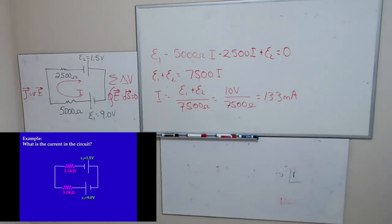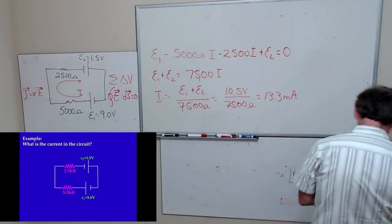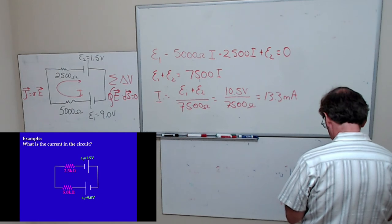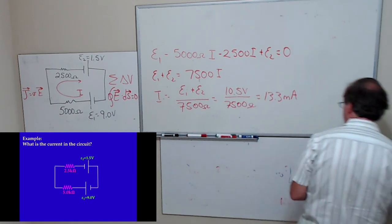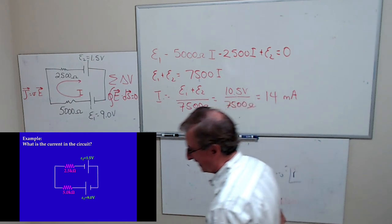So that's how you apply Kirchhoff's loop rule to a problem like this. For more complicated problems you want to use Kirchhoff's law because it always works - series and parallel rules only work for series and parallel circuits. A student pointed out I added wrong - it should be 10.5, not 10. Thank you - let me recalculate that. So I = 10.5 / 7500.